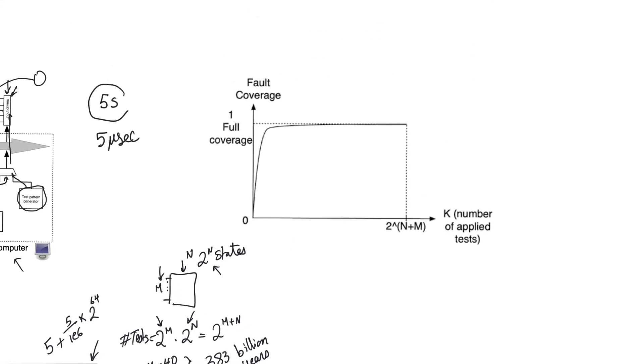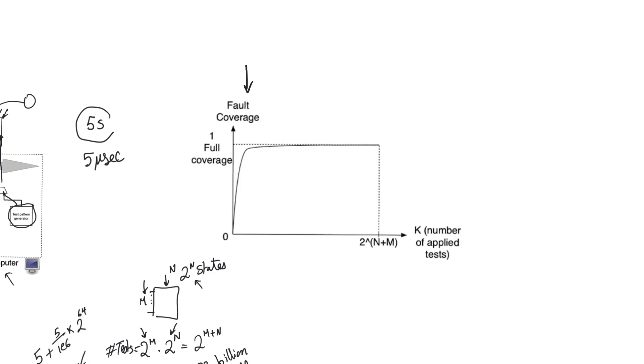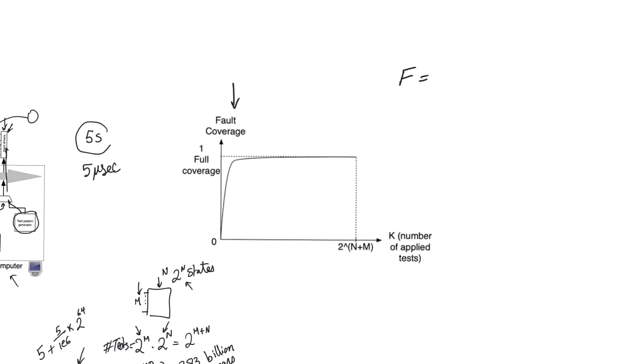So to fully test it, which means applying all the possible inputs for all of the possible states, we need 383 billion years. This is completely ridiculous, and nobody is going to observe this. And so a full test of this kind is not practical. So we have to define something really important, called fault coverage. So fault coverage is a very important concept. Fault coverage is a ratio, and it is the ratio between the number of faults that can be uncovered divided by the number of faults that could exist. It's a little bit hard to understand what this means.